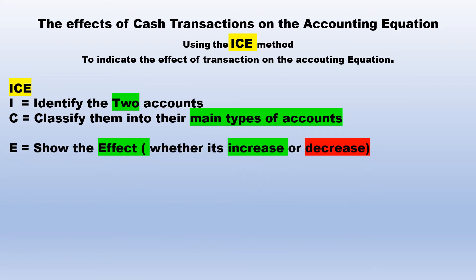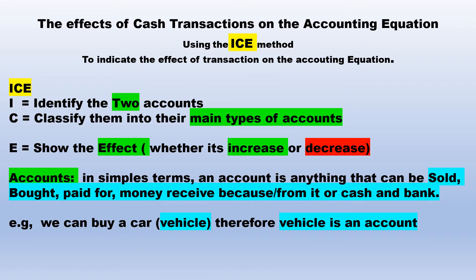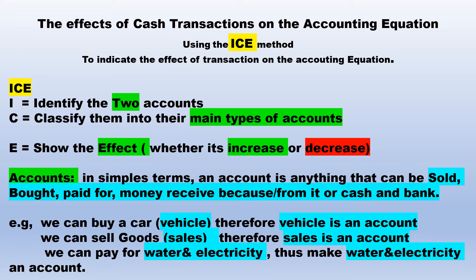And E — show the effects, whether there is an increase or a decrease. If you are still confused about accounts, go back to our previous video. In simple terms, an account is anything that can be bought, sold, or for which money is received — such as cash and bank. For example, a vehicle is an account, sales is an account, and water and electricity is also an account.